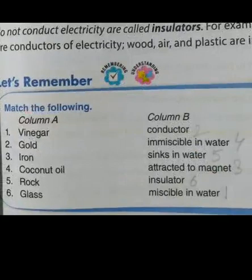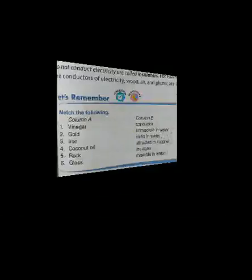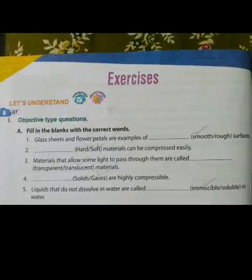Now let's remember — match the following, page number 67, column A with column B. Vinegar is miscible in water. Gold is a conductor. Iron is attracted to magnet. Coconut oil is immiscible in water. Rock sinks in water. Glass is an insulator.